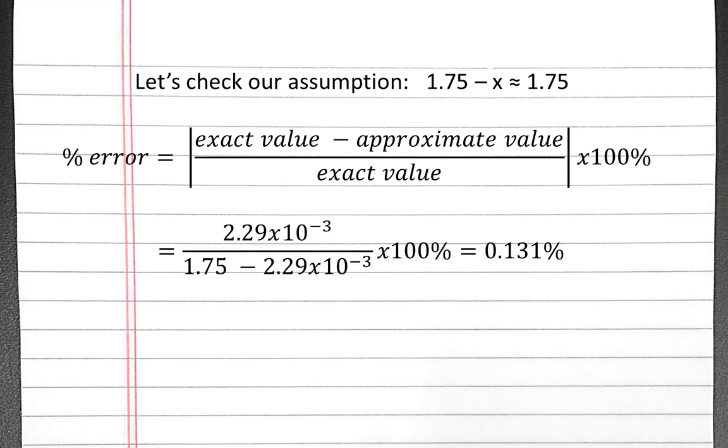So that will just end up being the absolute value of x divided by 1.75 minus x times 100%. That ends up being 0.131%. So our assumption is valid because it meets the 5% rule.